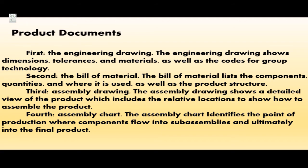Product documents. First, the engineering drawing shows dimensions, tolerances, materials, as well as codes for group technology. Second, the bill of material lists the components, quantities, and where each is used, as well as the product structure.